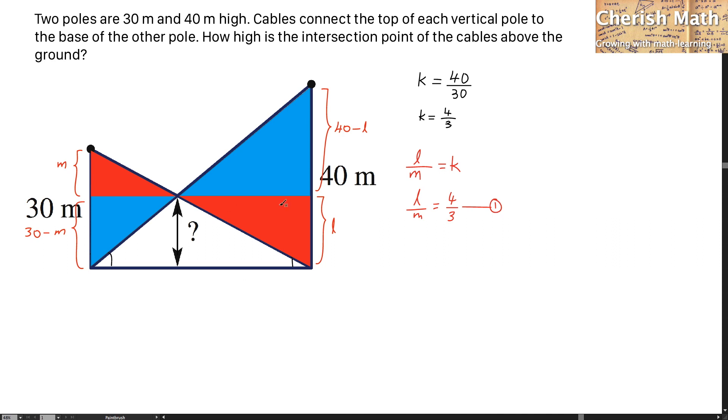I'm going to get the second equation which is the height of the L on the right hand side is the same as 30 minus M as located on my left hand side. And I name this as the second equation. I'm going to substitute the second equation into the first equation to form a single equation to solve the problem.